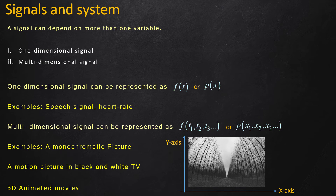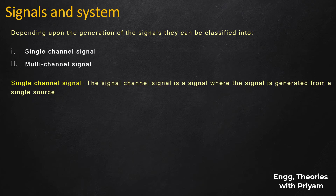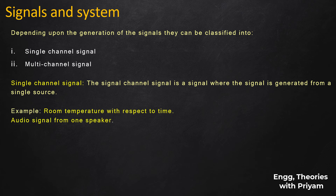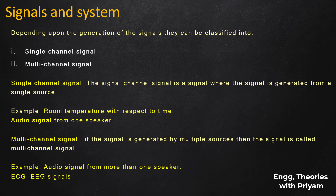In this lecture series, we will focus on signals that depend on a single variable, more specifically signals depending on the variable time. Based on how a signal is generated, signals can be classified as single-channel or multi-channel signals. A single-channel signal is generated from a single source; examples include room temperature with respect to time and audio signal from one speaker. If the signal is generated from multiple sources, it is called a multi-channel signal. Examples of multi-channel signals are audio signal from more than one speaker, and ECG and EEG signals, as they are taken from a number of different places in the human body. The maximum number of electrodes required for an ECG signal is 12, making it a 12-channel signal.